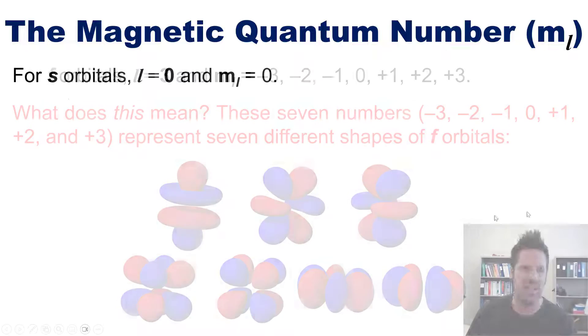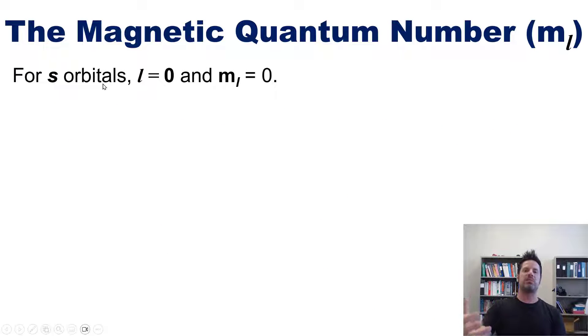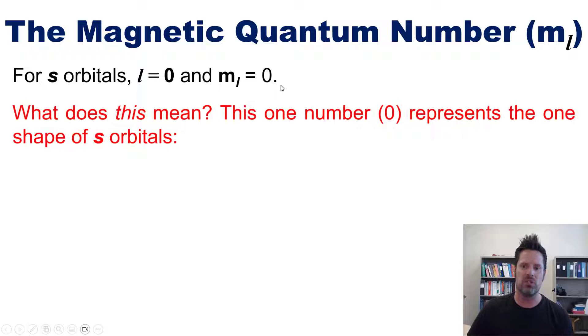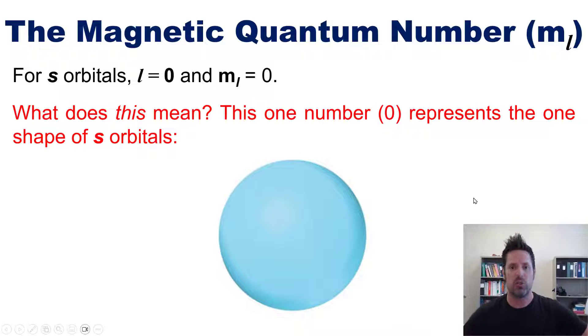We end at the beginning with our S orbitals. The only possible azimuthal l number you can have is 0, which means that m sub l is also equal to 0. This one number, 0, represents the one and only shape of S orbital, which is spherical. The take-home is S orbitals are boring.